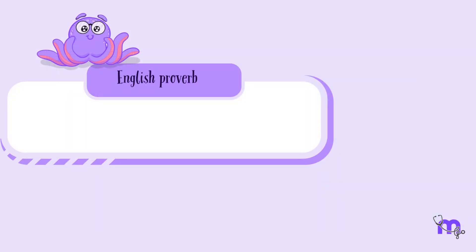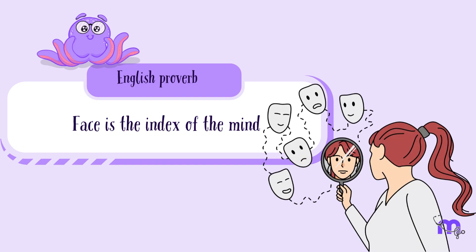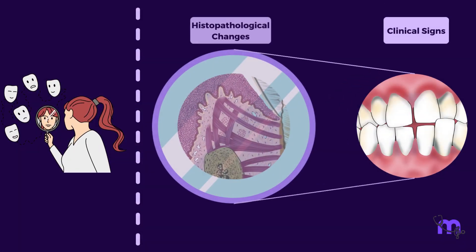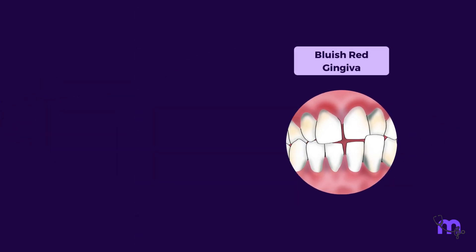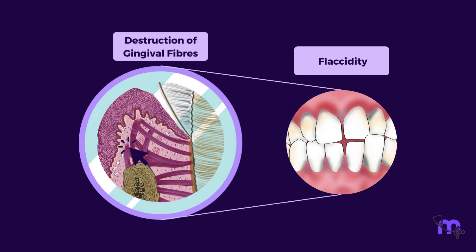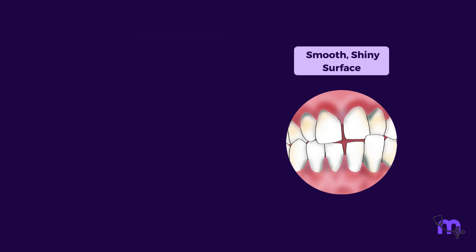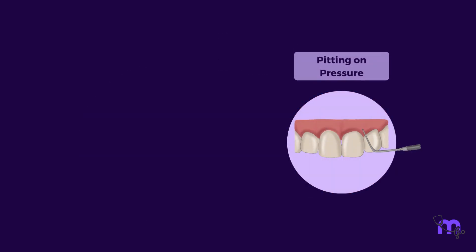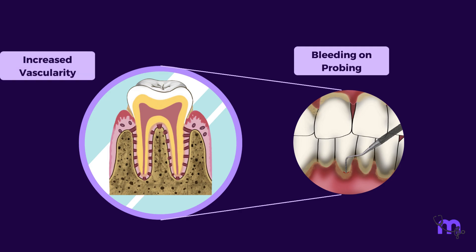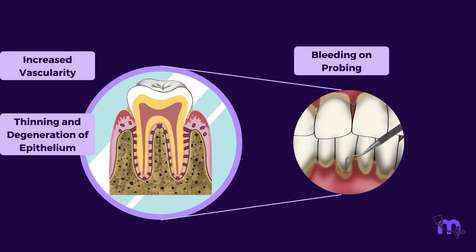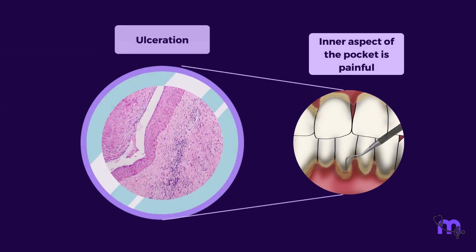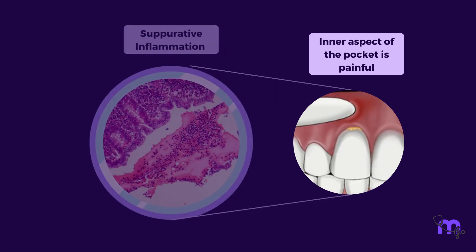There is an English proverb: face is the index of the mind. The clinical signs we observe in a patient are a reflection of histopathologic changes. The bluish-red discoloration of the gingiva is due to circulatory stagnation. The flaccidity is due to the destruction of gingival fibers. The smooth, shiny surface is due to epithelial atrophy and edema. Pitting on pressure is due to edema and degeneration. Bleeding on probing is due to increased vascularity, thinning and degeneration of epithelium, and engorged blood vessels near the inner surface. The inner aspect of the pocket is painful due to ulceration. Pus may be expressed on digital pressure due to suppurative inflammation.